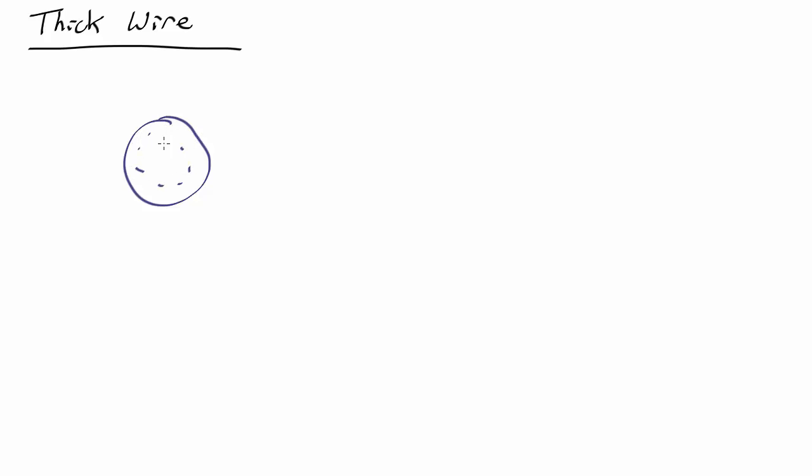Let's say the current is spread uniformly over the entirety of the wire. Now, what's the magnetic field due to this? Outside the wire, that is.